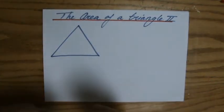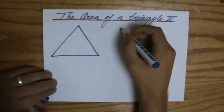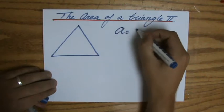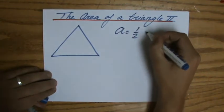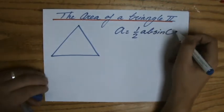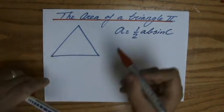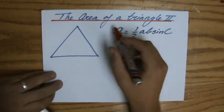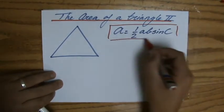All right, I promised you that I would prove that the area of any triangle can be found by doing a half times A times B times the sine of C. I'm going to prove that in this video. It should take about two minutes.